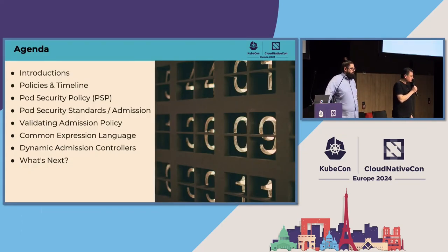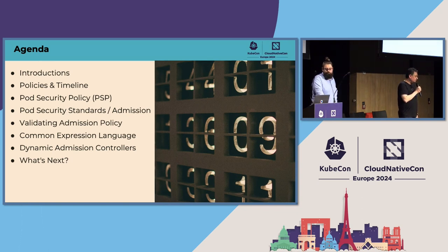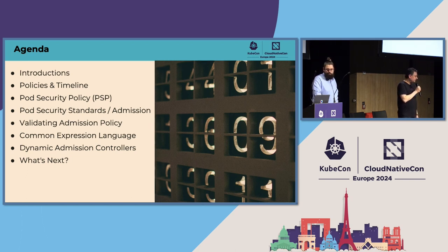We're going to start with some quick introductions, talk about why you need policies in Kubernetes, what Kubernetes policies are, and what types of policies are supported. Then we'll go into details about specific policy implementations including pod security admissions, PSPs and why they were deprecated, validating admission policies which is a new type in Kubernetes, compare that with dynamic admission controllers, and introduce CEL, the language used by validating admission policies.